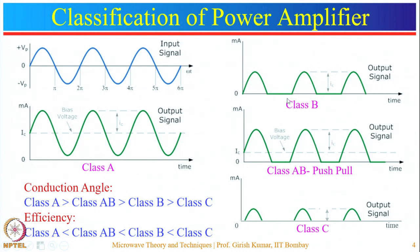Class B amplifiers suffer from distortion, so another type is made by shifting the operating point slightly towards the active region. These amplifiers are known as class AB push-pull amplifiers. The conduction angle is greater than 180 degrees — in class AB it could be around 200 or 220 degrees depending on the situation. The efficiency is slightly less than class B, but it provides a distortion-free output signal.